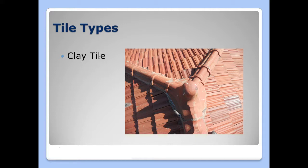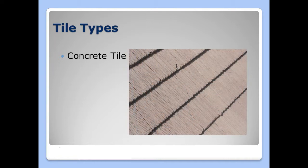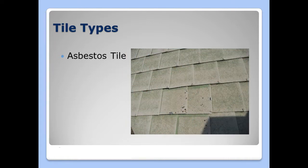There are several types of tile roof materials from which they're made: clay tile, concrete tile, and asbestos tile.